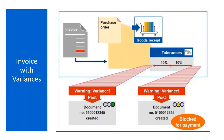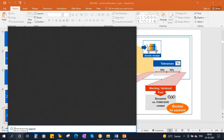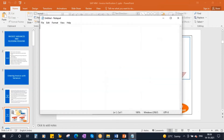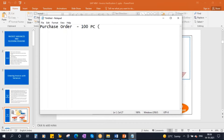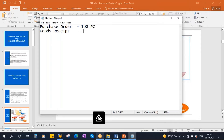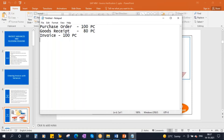Let me show you the scenario. Suppose you have a purchase order with a quantity of 100 pieces. You did the goods receipt, but vendor delivered only partial quantity — say 80 pieces. But he sends the invoice for 100 pieces. He delivered only 80 pieces but sends the invoice for 100 pieces. In this kind of scenario, the system has to block the invoice. This is a quantity variance — the problem is with quantity.